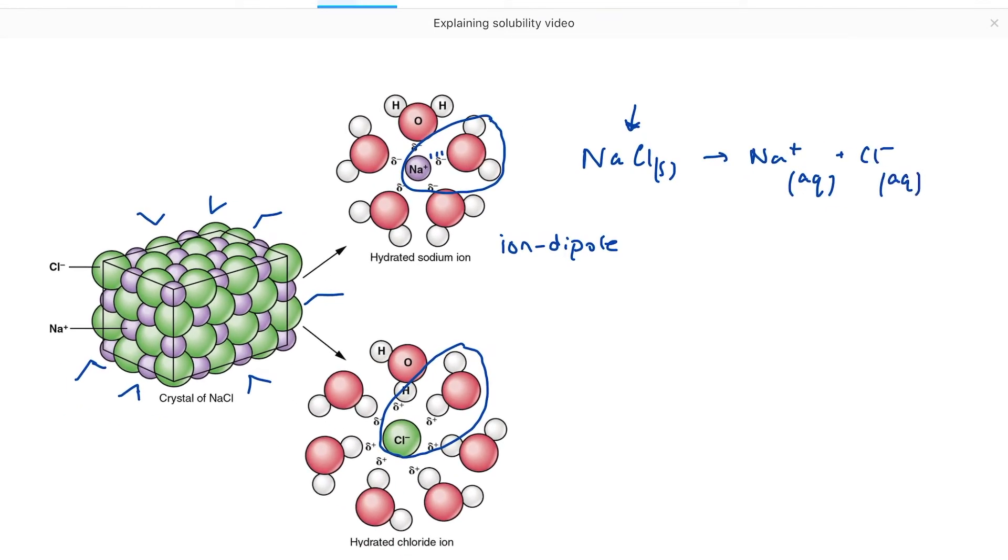That's part of the story. The second part of the story is that this reaction is driven by change in entropy. Entropy is a measure of the chaos or disorder in the system. Chemical reactions are favored if they become more chaotic, more disordered.